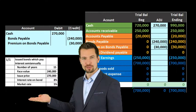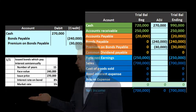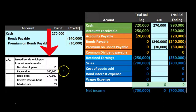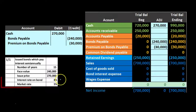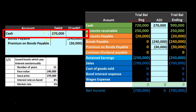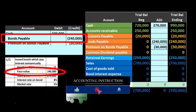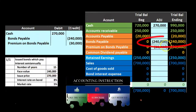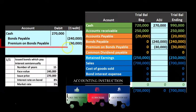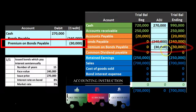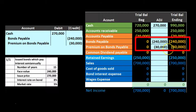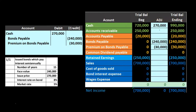This is our starting point — the initial transaction to get the bonds on the books. We have the number of years, the face amount of the bonds, and the issue price of 270. The market rate differs from the contract rate, so cash increases by 270, bonds payable goes on the books at the face amount of 240, and the premium — the difference — is 30. The 240 plus 30 equals 270,000 carrying amount or book value of the bonds.